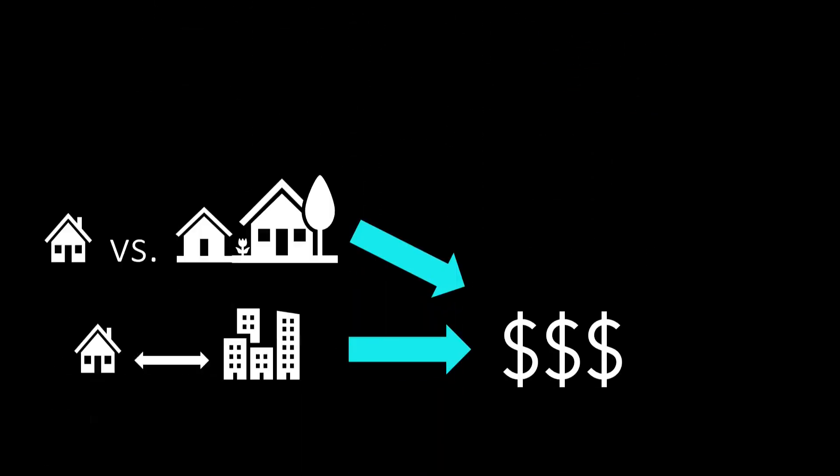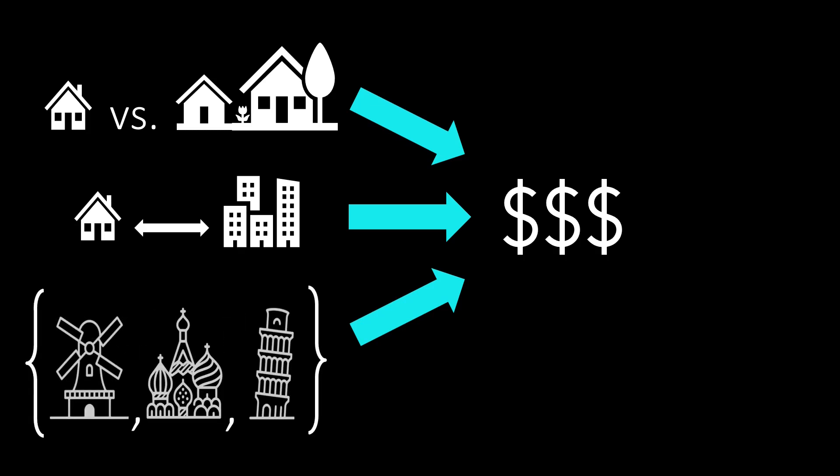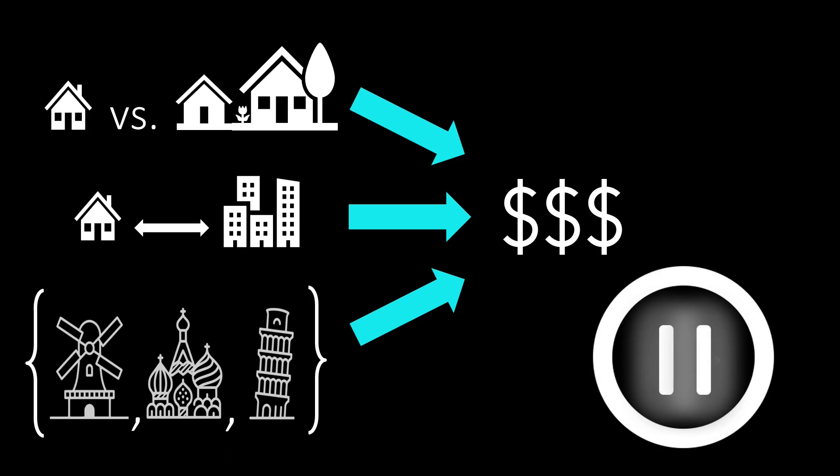Let's go back to our example of estimating the price of a house. Apart from the continuous features like the size and the distance to the city centre discussed so far, the price is most likely also influenced by discrete features like the city in which the house is located. To be more specific, let's say we consider the options Amsterdam, Moscow and Pisa. How can we model such a discrete choice as an input feature? Please pause and think for yourself before continuing.